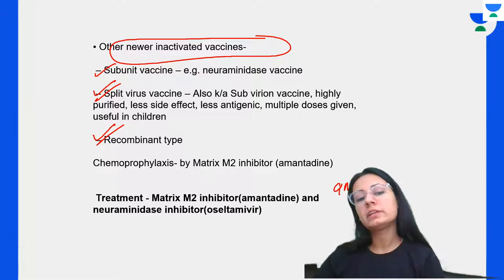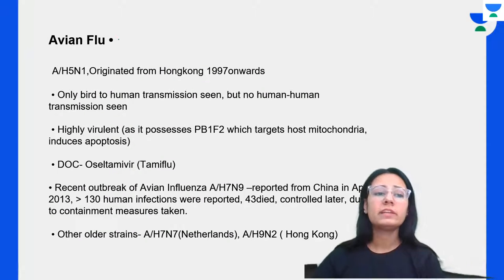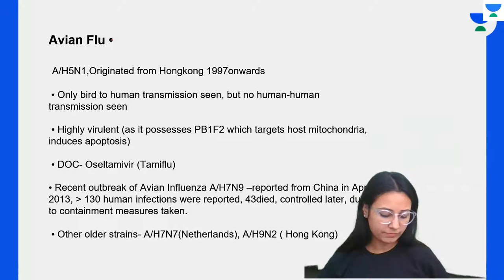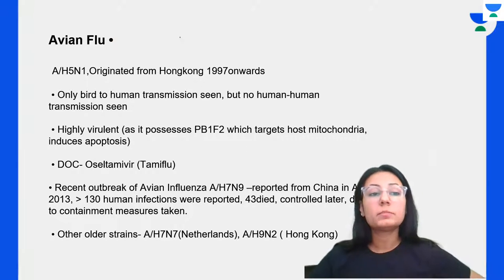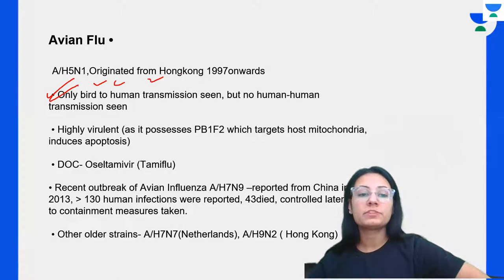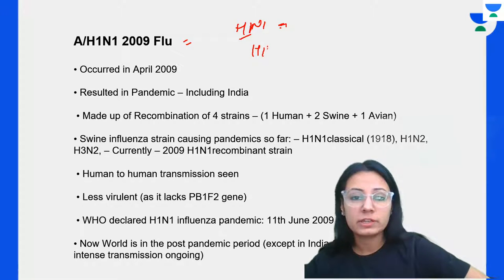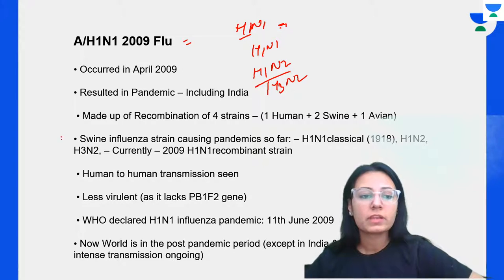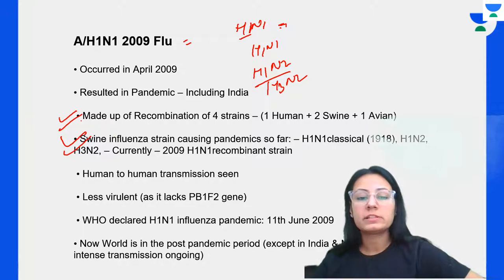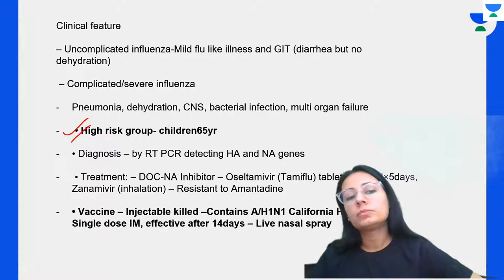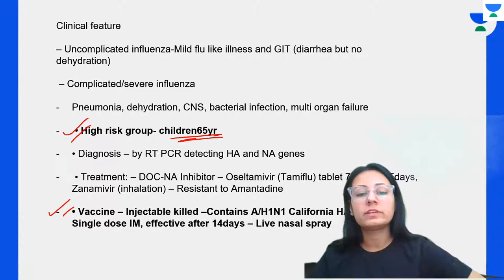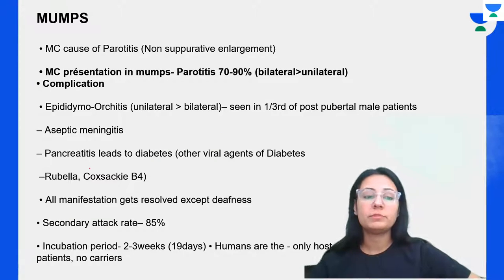Vaccines: killed vaccine prepared in allantoic cavity; live vaccine stimulates both local and systemic immunity; other new inactivated vaccines include subunit, split virus, and recombinant. Treatment: amantadine and oseltamivir. Avian flu H5N1 — bird-to-human only, no human-to-human transmission, highly virulent, drug of choice is oseltamivir. Swine flu H1N1 — strains H1N1, H1N2, H3N2, made up of four strains, resulted in pandemic including India; drug of choice Tamiflu (oseltamivir).